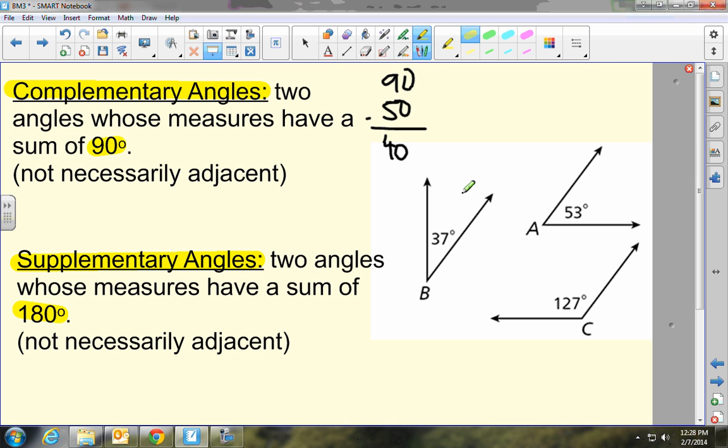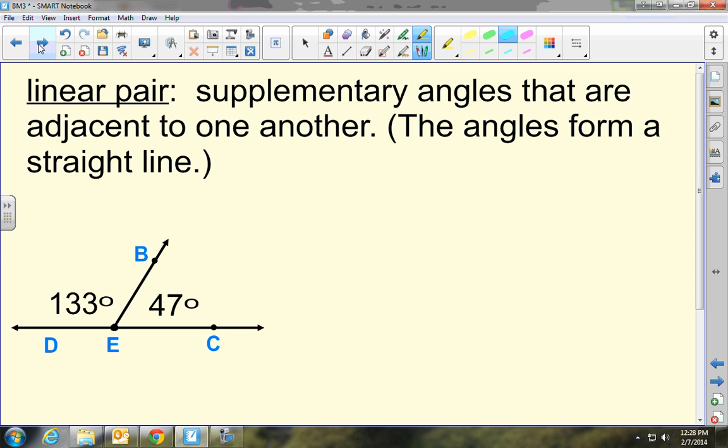So if we look over here at our examples, which two angles here are complementary? A, B, A, C, or B, C? It's pretty easy to see that B and A, 53 and 37 add up to 90, so those are complementary. As opposed to which ones are supplementary? Well, that's got to be 27 and 53, so A and C add up to 180. They're supplementary. Okay, here's that linear pair again. Supplementary angles that are adjacent to one another, so 133 and 47 add up to 180, and they're right next to each other. They're adjacent, so they're a linear pair. And make sure you're pausing to write this information down periodically throughout this video lecture.